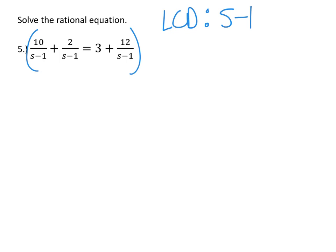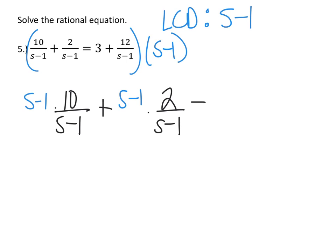So I'm going to multiply everything by s minus 1. So I'm going to have s minus 1 times 10 over s minus 1 plus s minus 1 times 2 over s minus 1 equals s minus 1 times 3 plus s minus 1 times 12 over s minus 1.